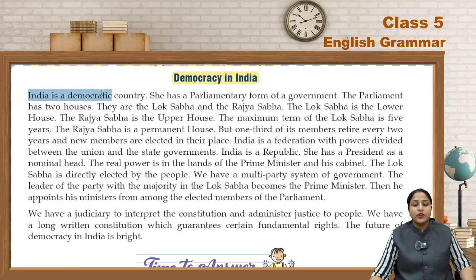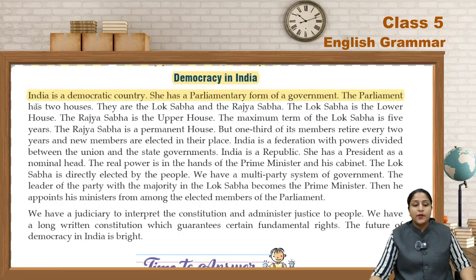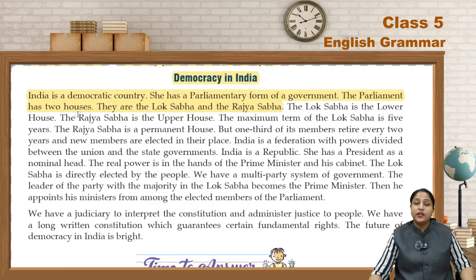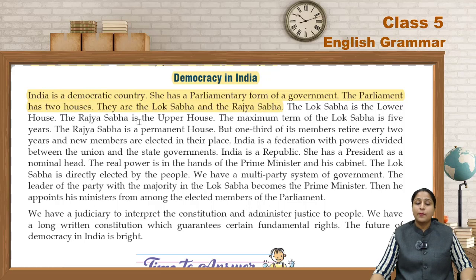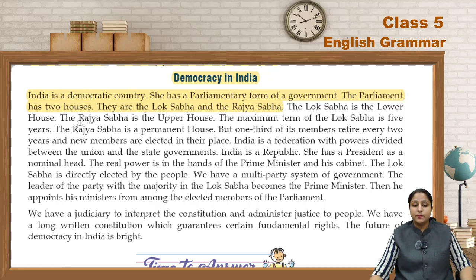India is a democratic country. She has a parliamentary form of government. The parliament has two houses — the Lok Sabha and the Rajya Sabha. India ek democratic country hai aur yahaan par doh houses hain parliament mein: Lok Sabha aur Rajya Sabha.